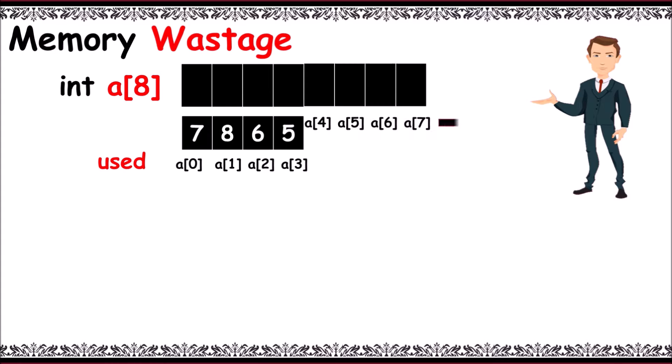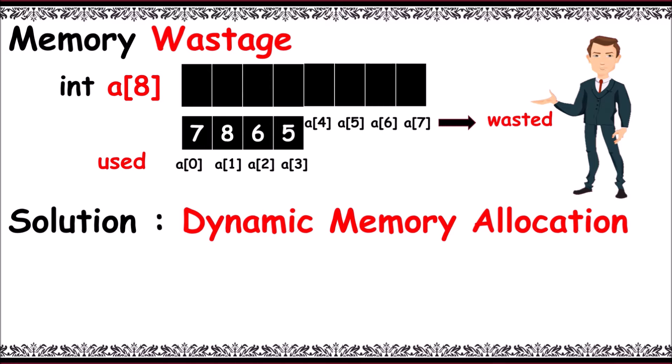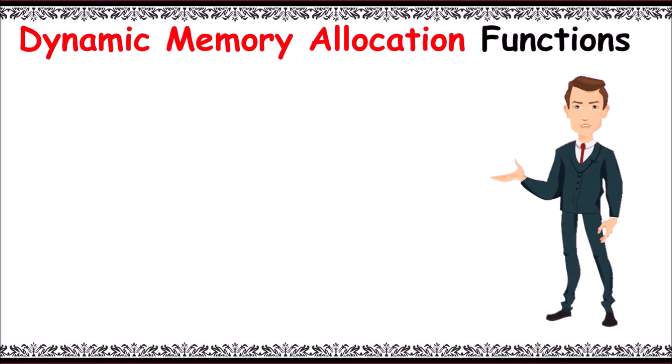Now we have a solution for this: it is dynamic memory allocation concept, where we allocate memory at runtime. For achieving this task, we have four different functions in dynamic memory allocation: they are malloc, calloc, realloc, and free, available in stdlib.h header file or alloc.h header file.